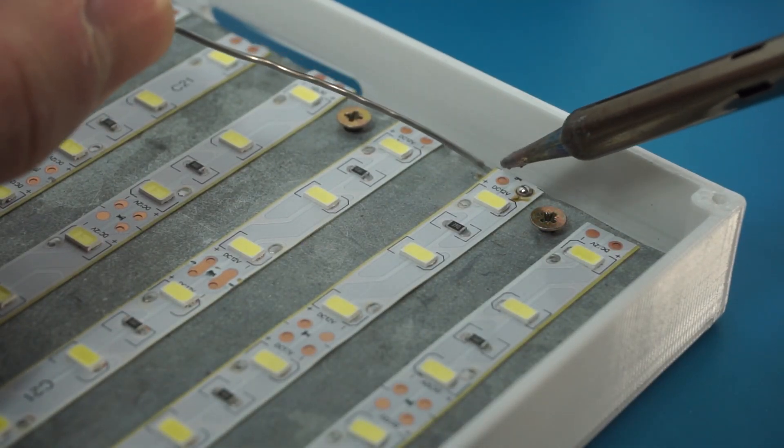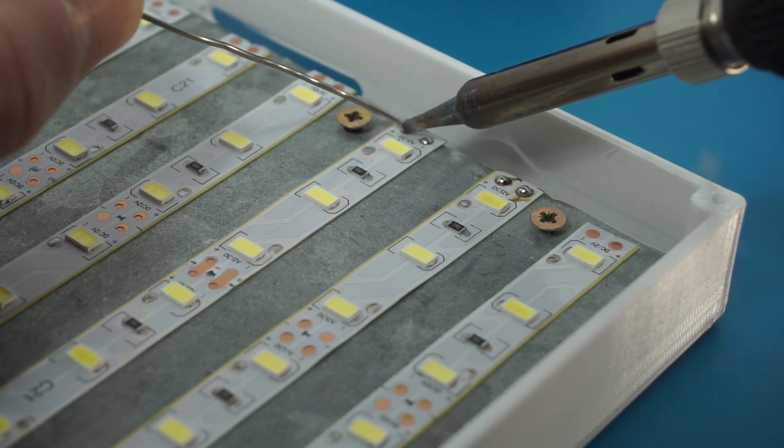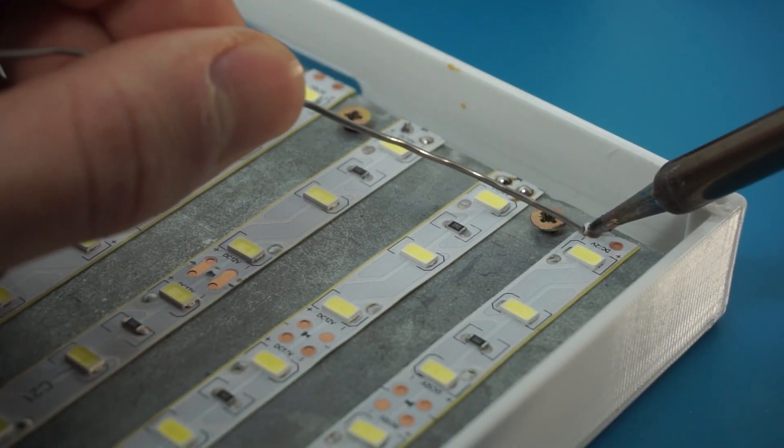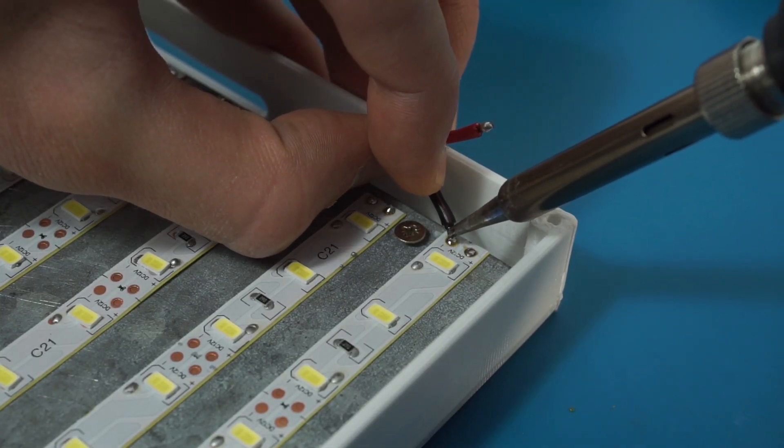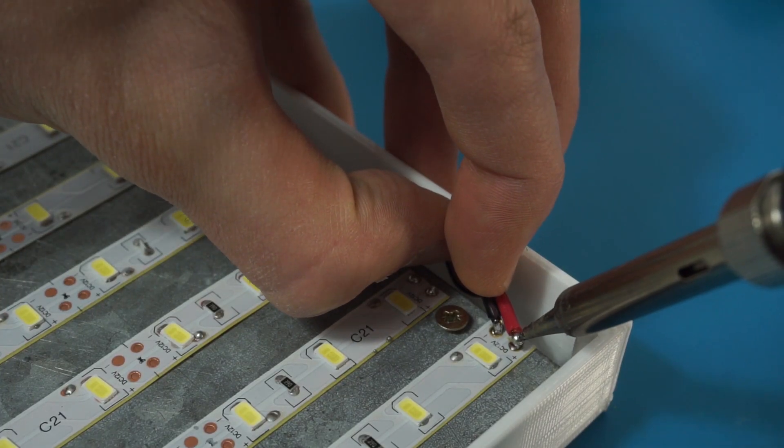Now the last thing we have to do is connect power wires. To do this, first I applied solder to all the positive and negative pads. Later I took some wires and soldered them to the first and last strip in such a way that the wires stick out of the back.